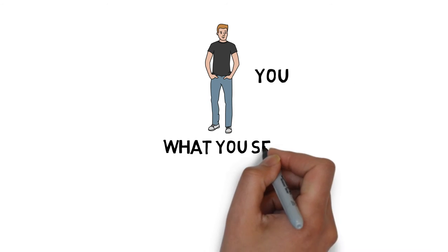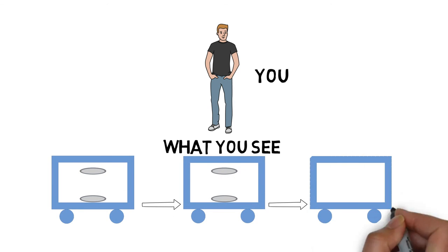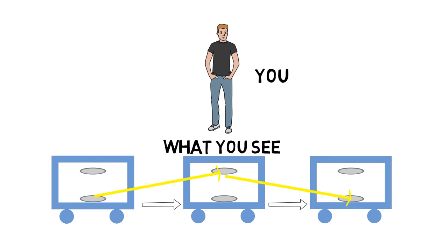Now, if you are outside the car and they turn on a light while driving the car really fast, you will see the light go on a curved V-shaped path.